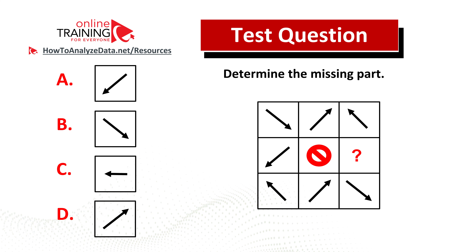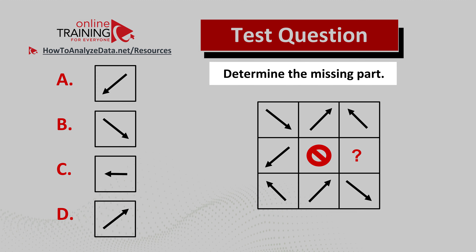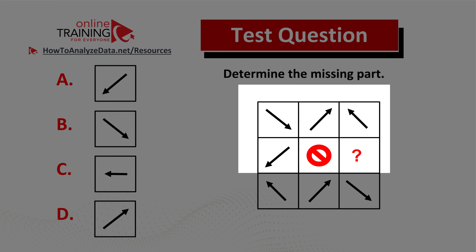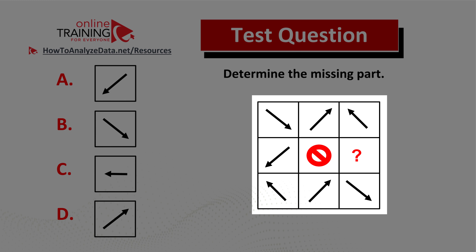Some of you might find this question tricky, but regardless of whether you can solve it or not, you will be excited to learn the solution to this real life assessment test question. Here's the question: determine the missing part. You're presented with a three by three square which has arrows pointing in different directions. In the middle of the square you have the X sign, and one of the squares is missing its arrow.